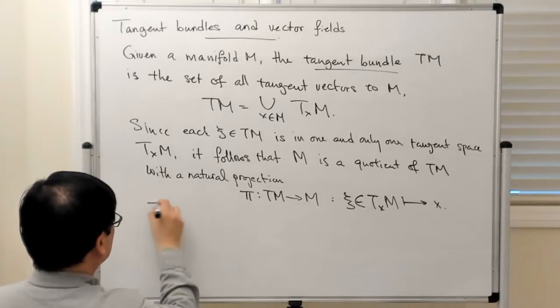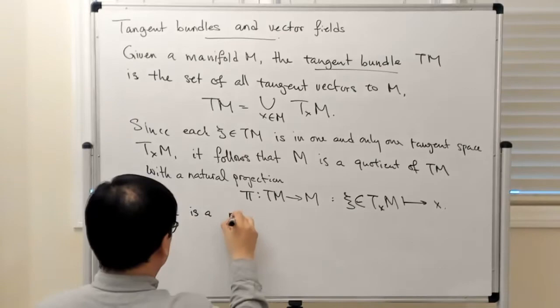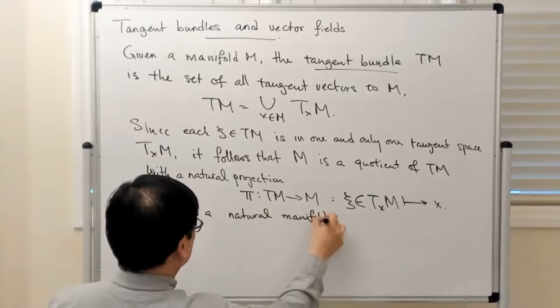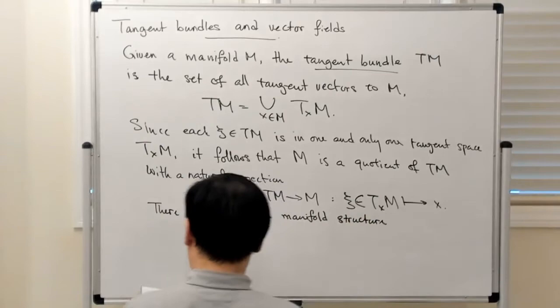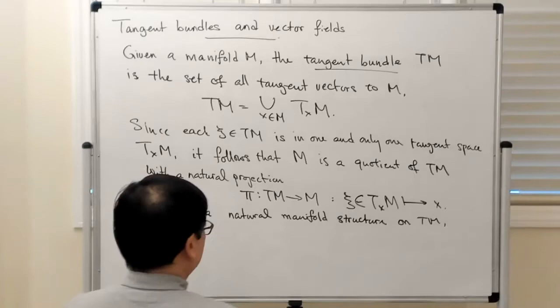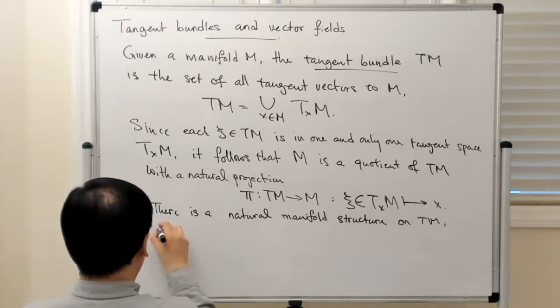And then there is a natural manifold structure on TM, and it's induced, as you might expect, by the manifold structure on M.